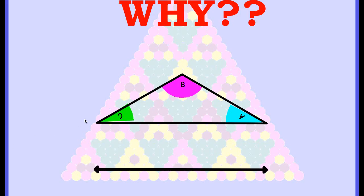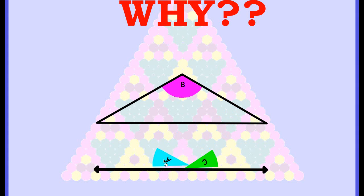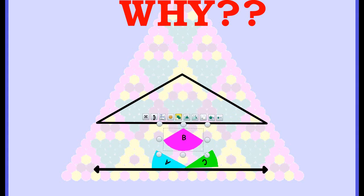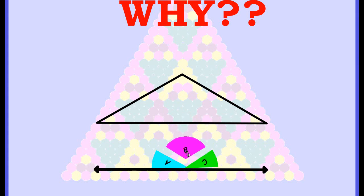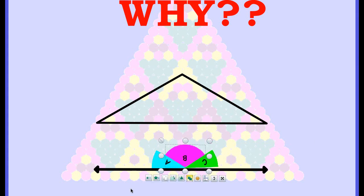Why? How does this work? If you were to tear off all three angles and put them together to make one big angle, you can see that together the three angles make a straight line, and we've learned that a straight line measures 180 degrees.